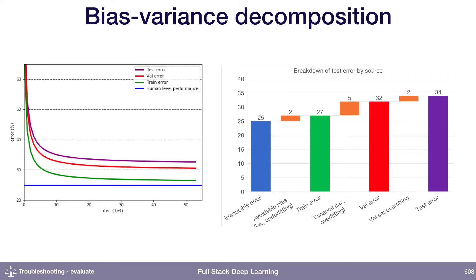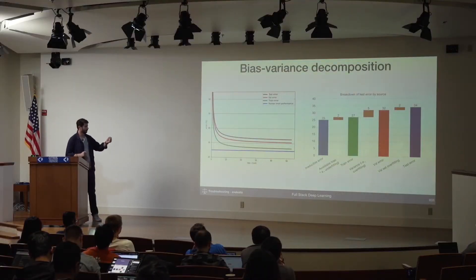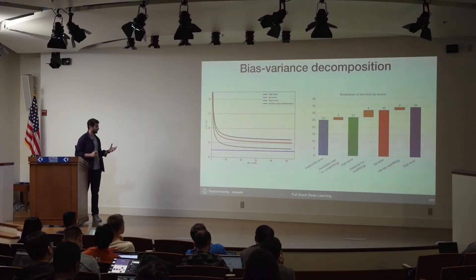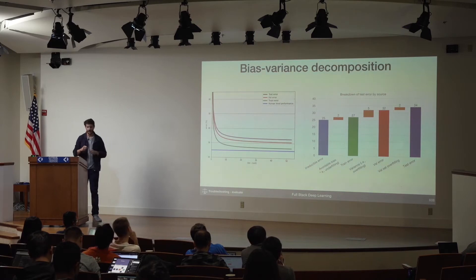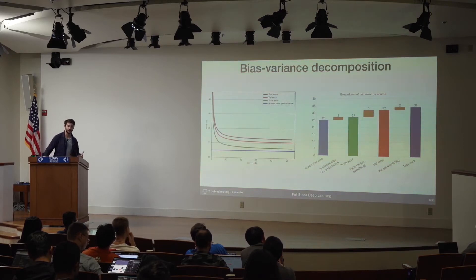Those component parts are some irreducible error that comes from whatever your baseline is — whatever human level performance is or whatever your target performance is. And then on top of that, you add some avoidable bias, which is also known as under-fitting. That's measured by the gap between your irreducible error and your training error — how much worse is your training error than you expect it should be able to do?